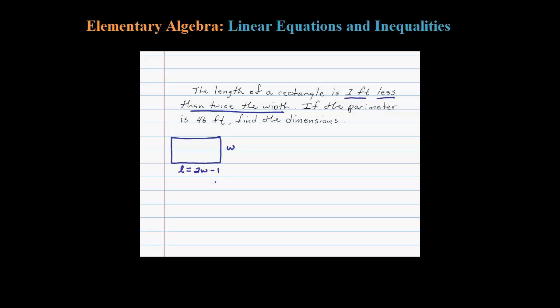Now we have to look for the keyword here: perimeter. And we have to remember the formula for a perimeter. We know the perimeter equals 2L plus 2W, or length plus length plus W plus W. We're going to add up the lengths of all the sides of the rectangle.